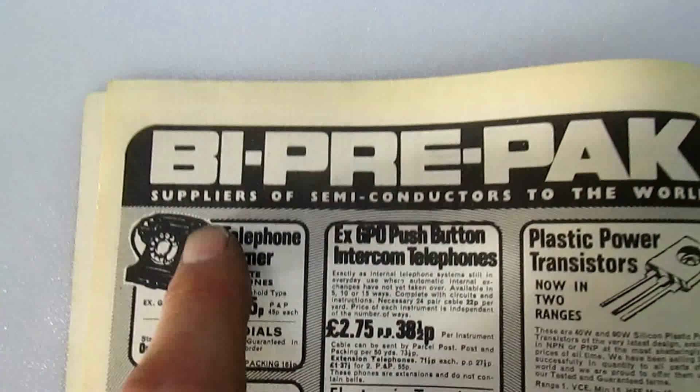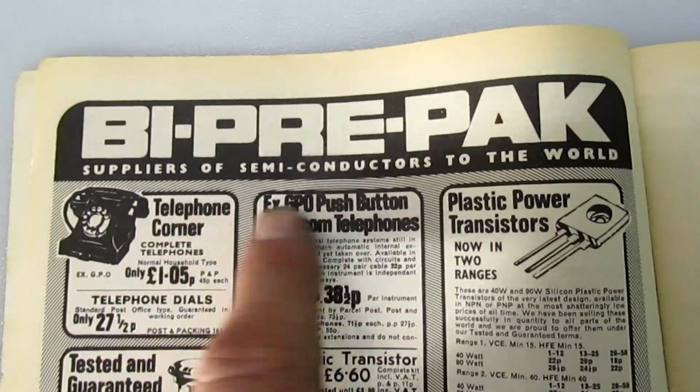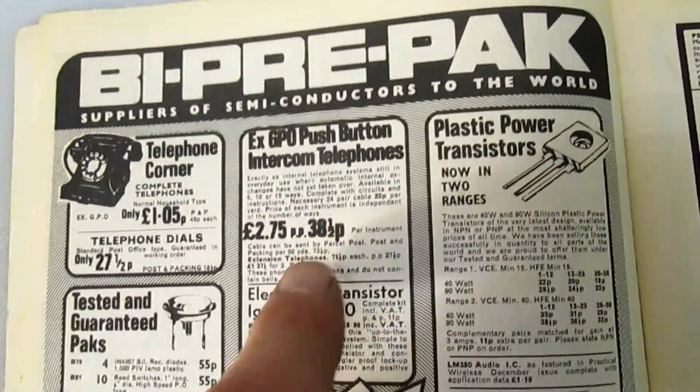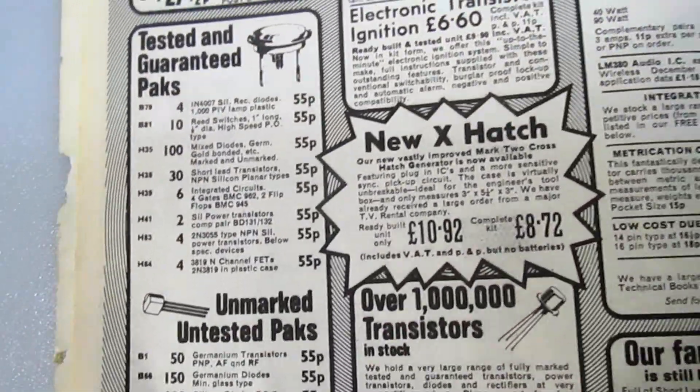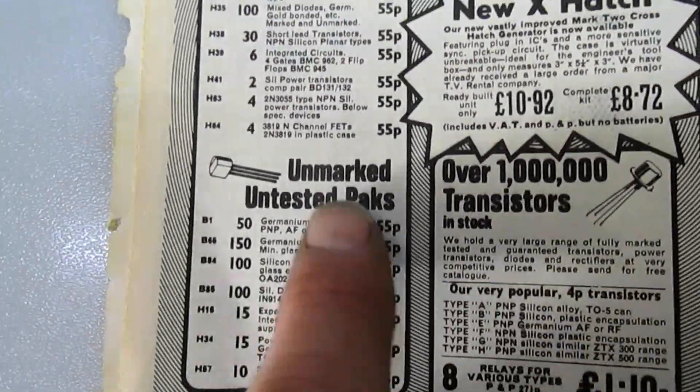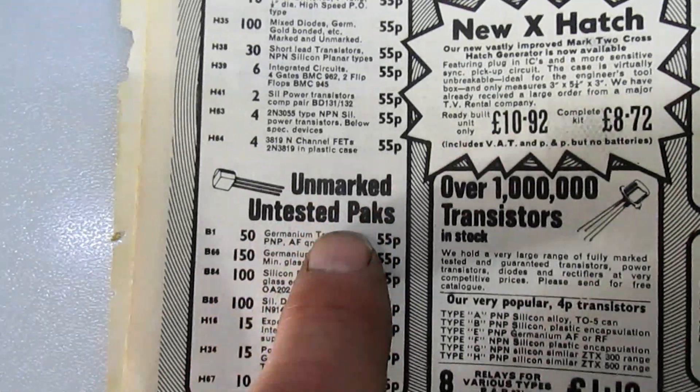In 1974, a company called Bi-Prepack, suppliers of semiconductors to the world. As a kid I used to buy these from here. If we move down to the listing, we've got unmarked untested packs.